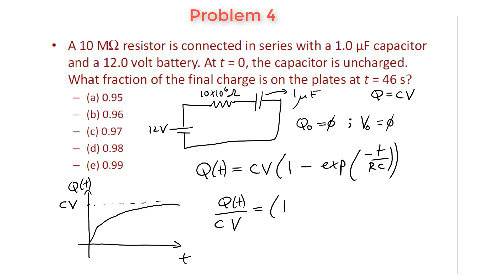Q(t) over CV is simply going to equal 1 minus exponential of minus t over RC. This is 46 seconds divided by RC. R is 10 megaohms and C is 1 microfarad. 10 megaohms times 1 microfarad simply equals 10 seconds.